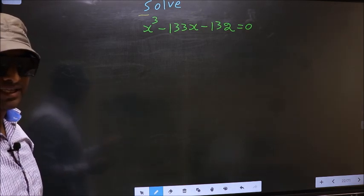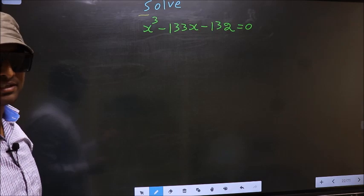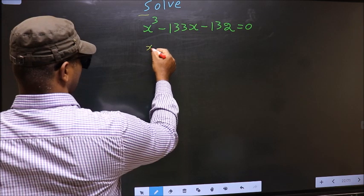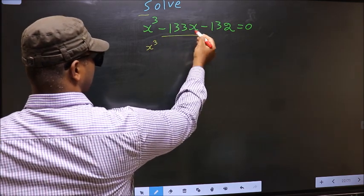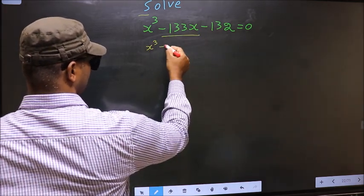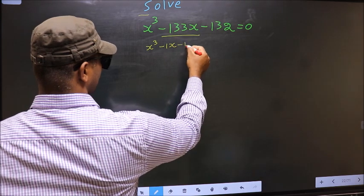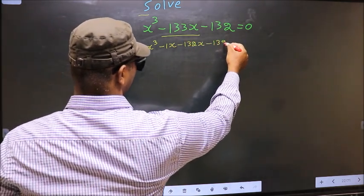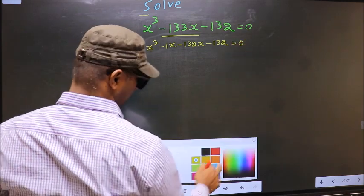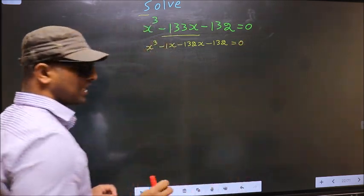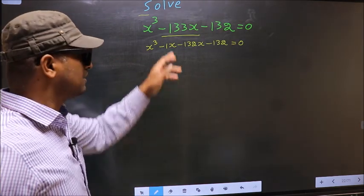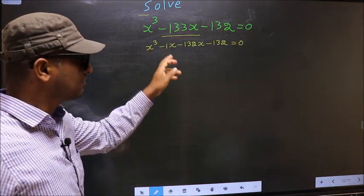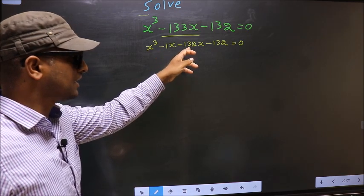For that, we need to change the x term. In place of minus 133x, I write minus 1x minus 132x minus 132, equal to 0. In other words, I have split minus 133x into minus 1x minus 132x.